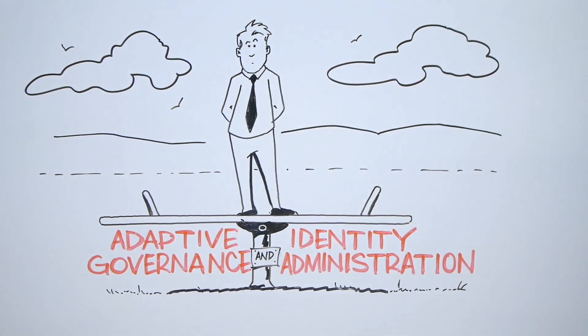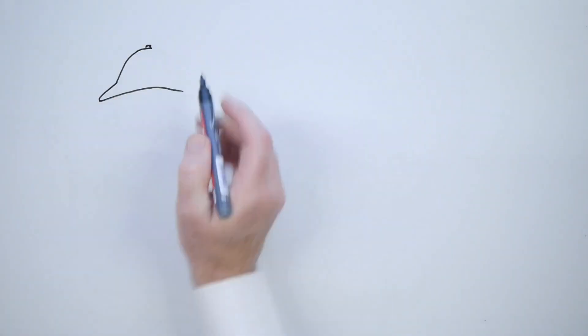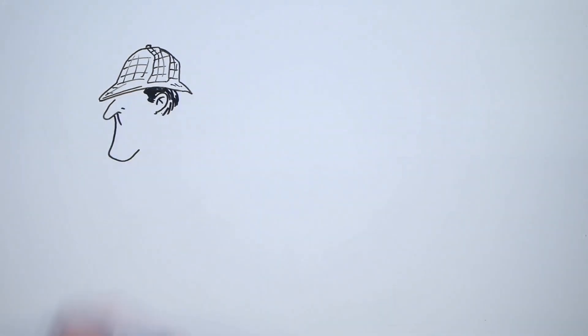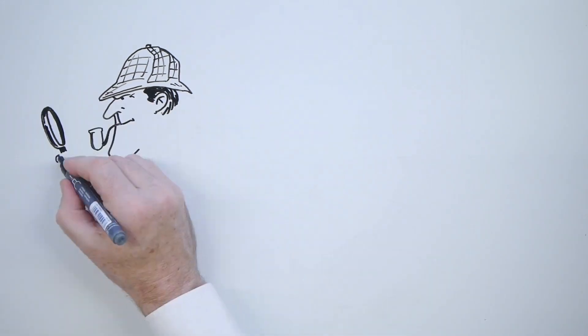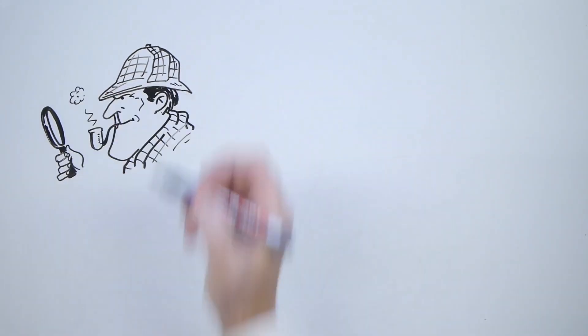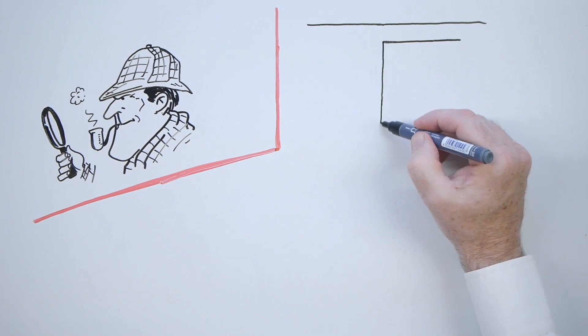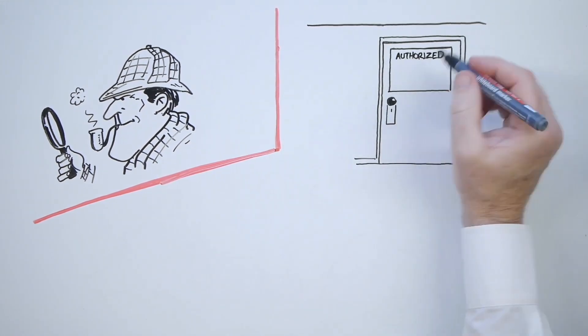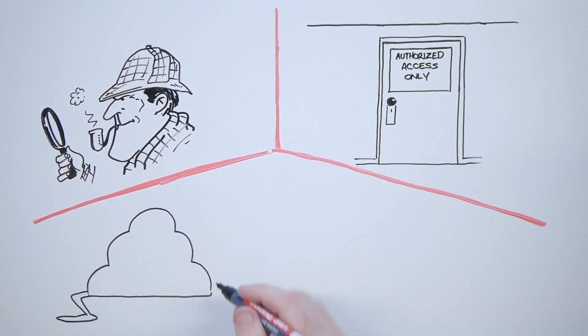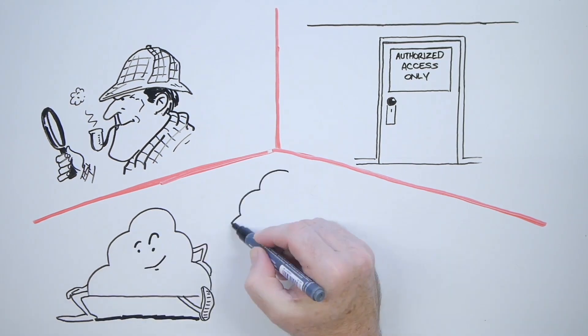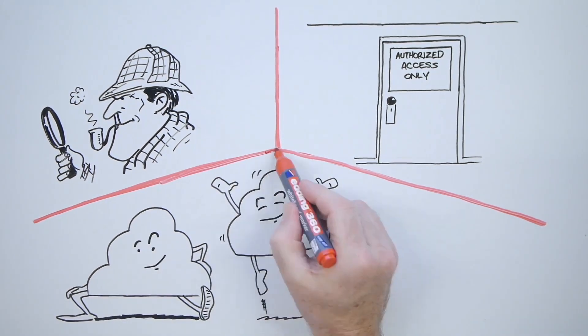These policies cover three specific elements: establishing control through identity because you can't control what you cannot see; monitor and manage access because accessibility is constant and changing; use insight to adapt and remediate because it's only the most agile of infrastructures that survive.